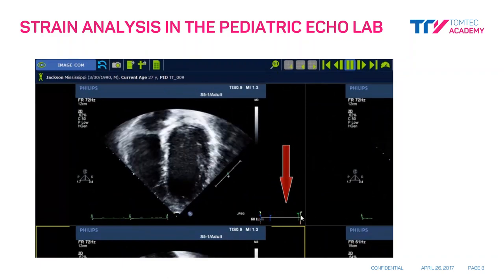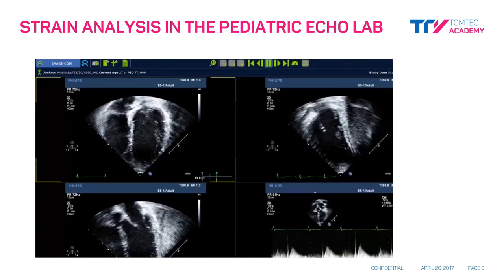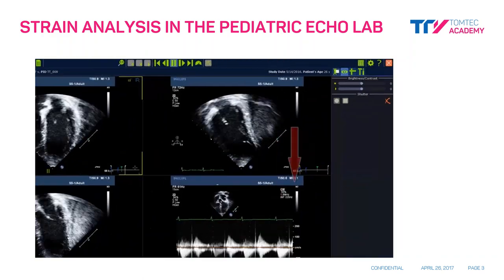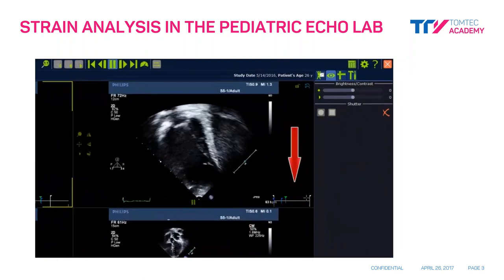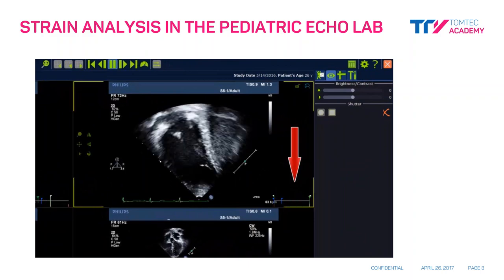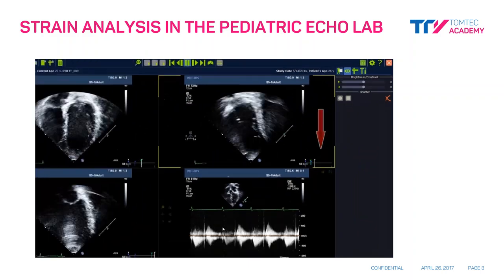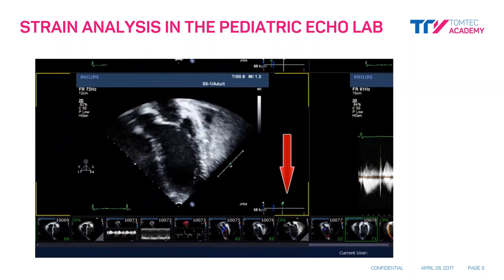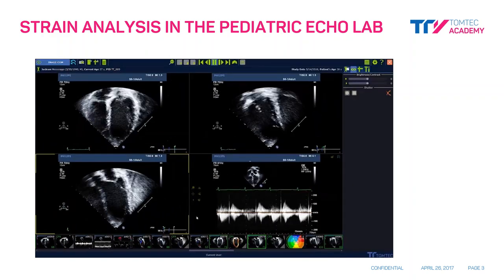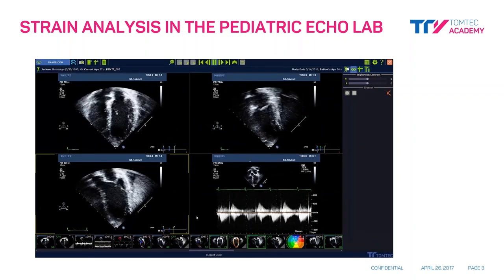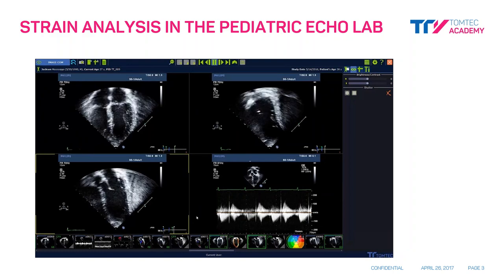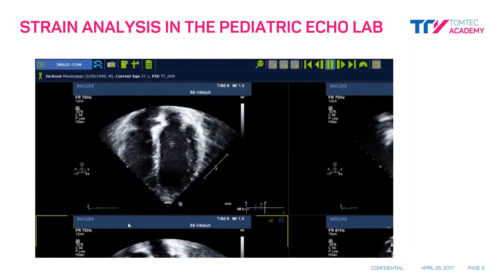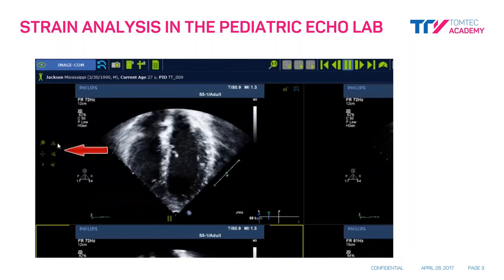By using a left click and drag and drop, the reference markers can be set to define any one beat cardiac cycle. Complete this same process for all of the images to be analyzed. Next, to account for the sector flip observed in most pediatric echo labs, the user will refer to the sector orientation keys located to the left of the images. We will begin by flipping the apical four chamber view.